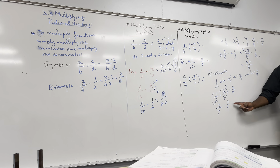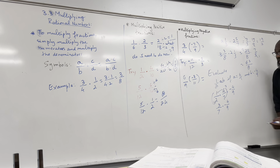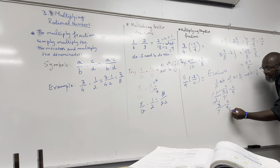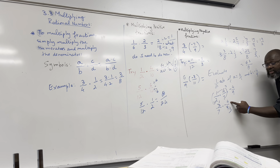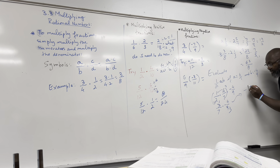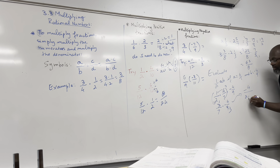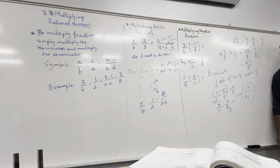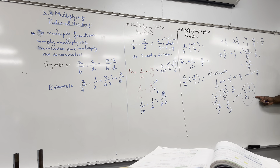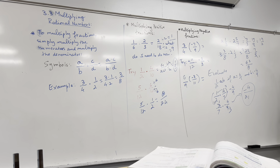This is how you multiply mixed fractions — first turn them into improper fractions, then multiply. Now we're going to learn how to evaluate a rational expression using multiplication. Evaluate one-half times a times b, where a equals six over seven and b equals negative four over nine.